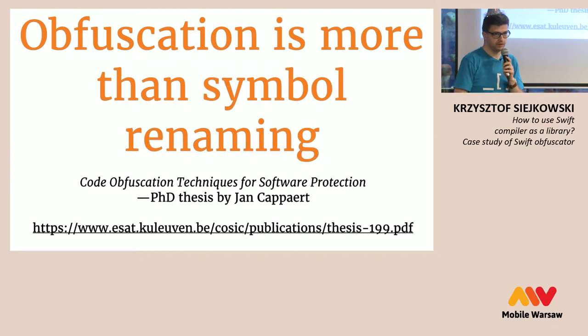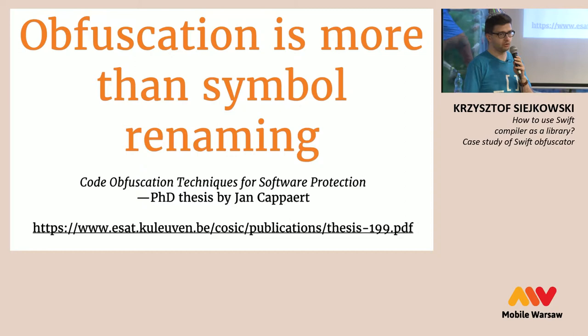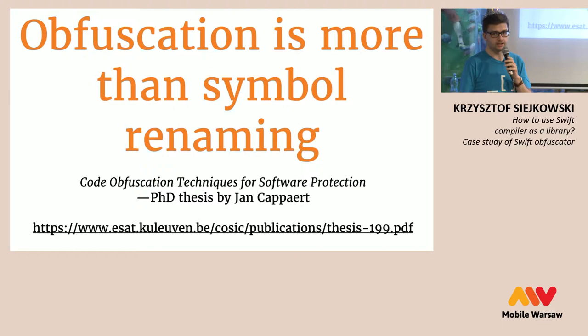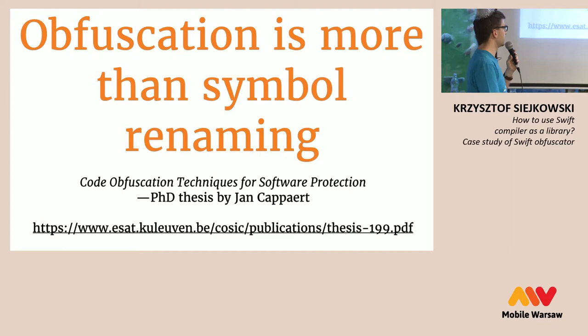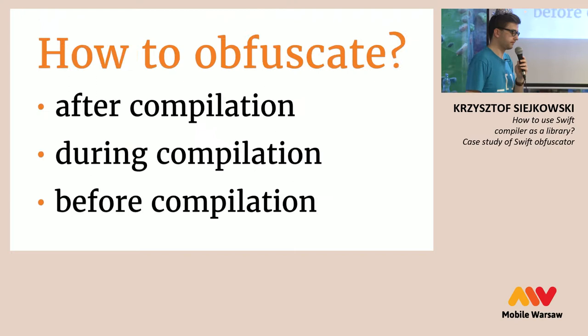Anything with the @objc attribute is visible the same way it was in Objective-C. Also, symbol renaming is only one obfuscation technique — there are many more: introducing branches that will never execute but the compiler won't strip, encrypting API keys behind a function with complex logic, and so on. There's a nice PhD thesis I went through when getting familiar with the subject — the link will be in the presentation — that's a great overview of various code obfuscation techniques, most of which apply to Swift as well.